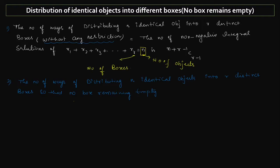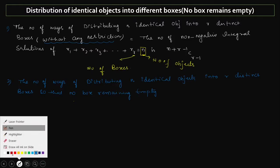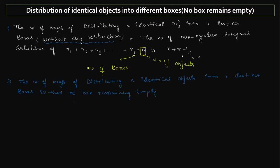So how will we do this? Instead of deriving from scratch the same way we did the first derivation, we will take the help of that first result to derive this property. The result is: n-1 C r-1. The number of ways of distributing n identical objects into r distinct boxes so that no box remains empty is n-1 C r-1. Let's see how we get this.